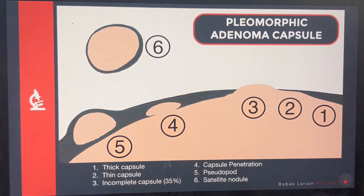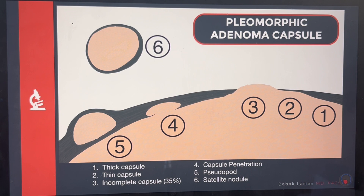We want to always do everything we can to prevent this from happening. The surgery is more challenging, so you want to do everything possible to avoid it. Why does it happen? Pleomorphic adenomas are very odd — they are tumors that don't have a perfect capsule. Most tumors have a capsule surrounding them, a sheath, a covering.